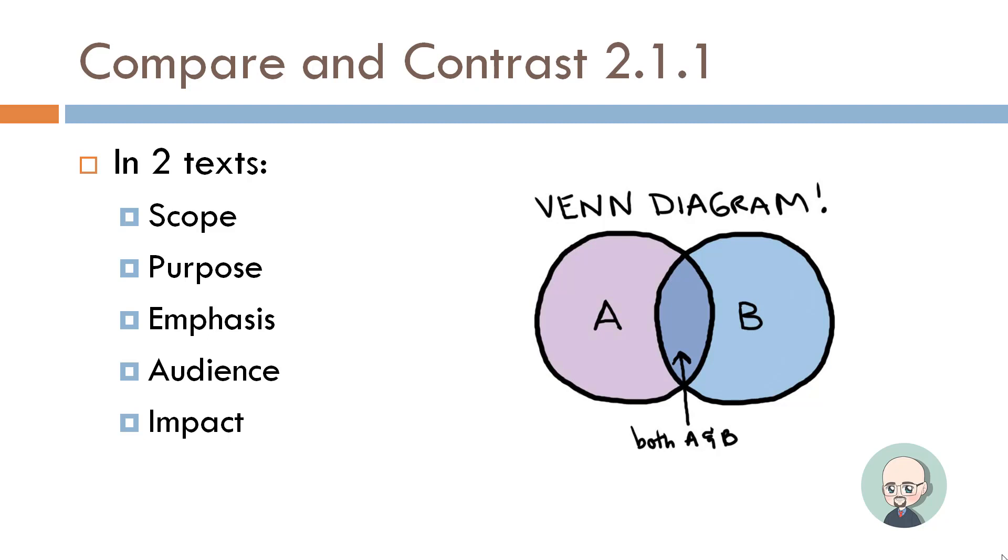So in two texts, some of the things we're going to compare are scope, what's being talked about and in what level of detail, the purpose, why would the author write this piece, what's their goal, do they want to convince the audience, what's the emphasis of the piece, what particular aspect of a subject is it focused on.